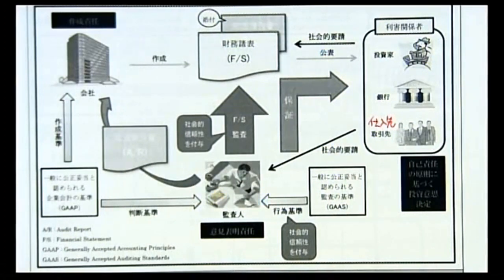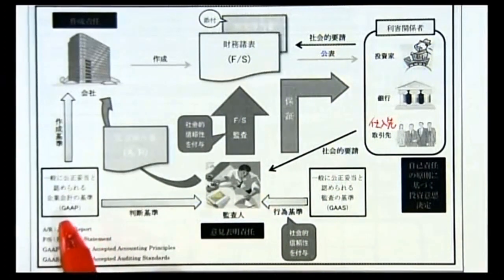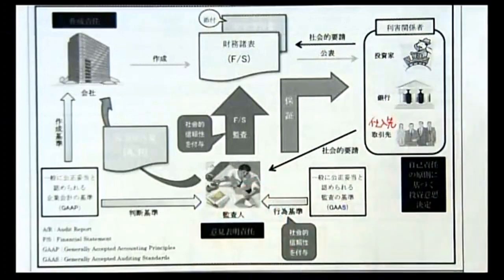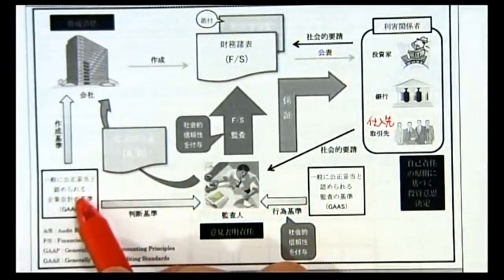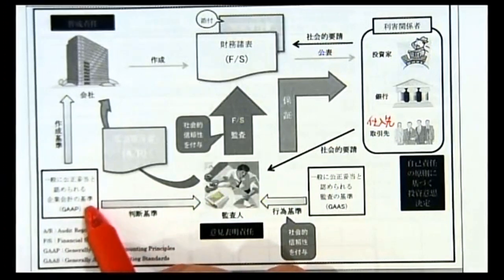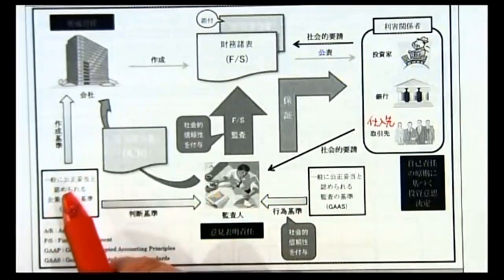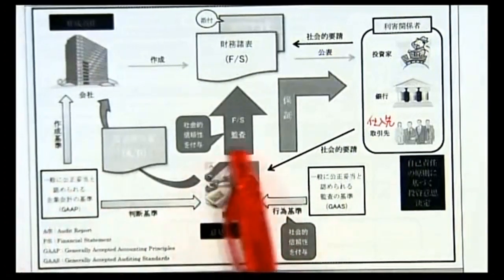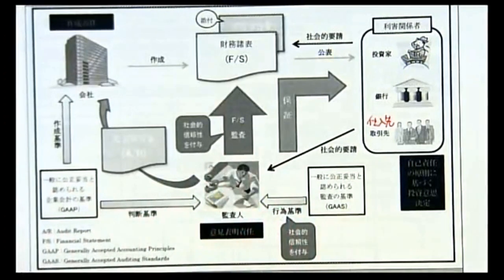一般に公正妥当と認められる監査の基準（GAAS）は、どうやって監査をすべきかという監査のやり方が書いてある基準です。監査人にとってはこれが監査という行為をするための行為基準です。この一般に公正妥当と認められる監査の基準を勉強するのが監査論です。